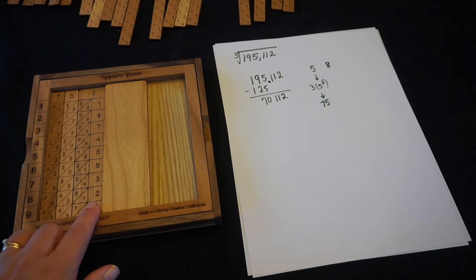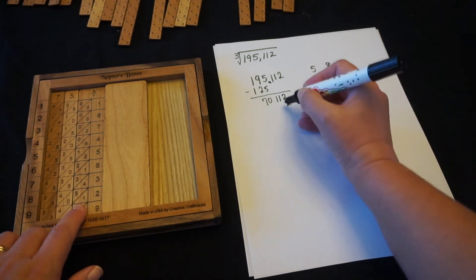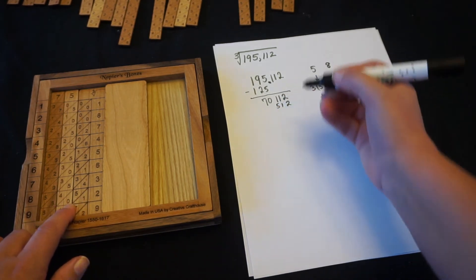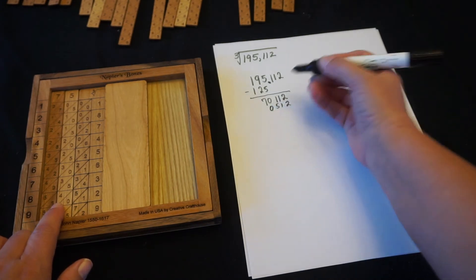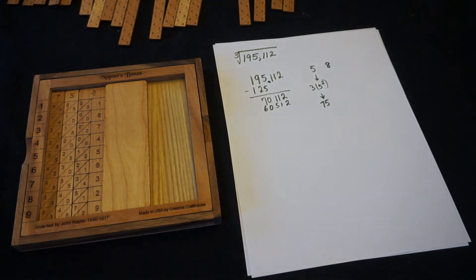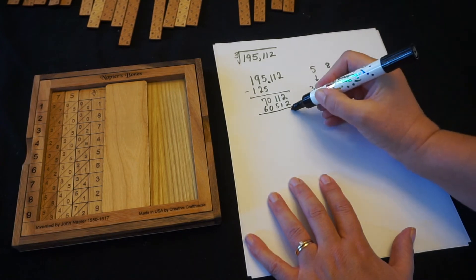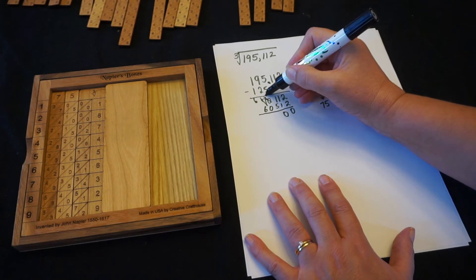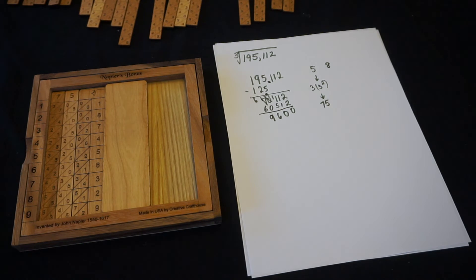And we're going to write out the result here. Just write it down. The ones place is a 2. The tens place is a 1. The hundreds place is a 5. The thousands place, let's see, 6 plus 4, that's 10. Carry the 1. 5 plus 1 is 6. So I get 60,512. I'm going to subtract that off. I need to do some borrowing here. And we get 9,600.